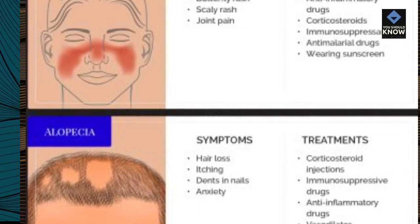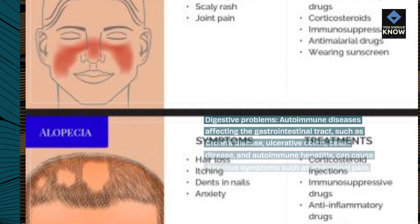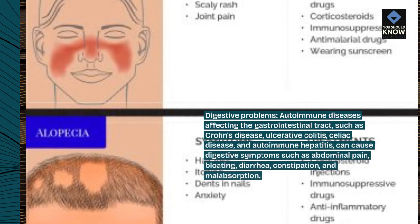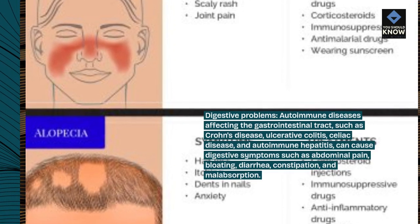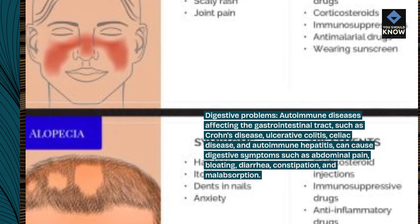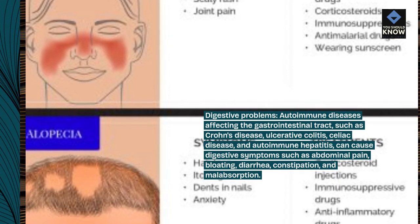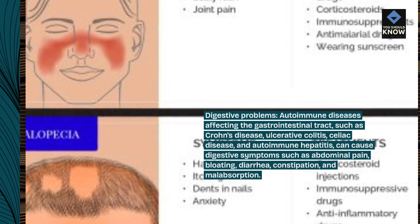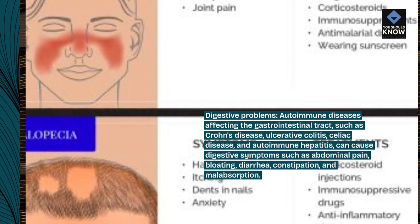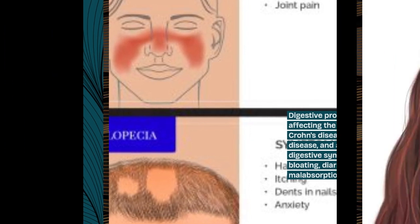Digestive problems: autoimmune diseases affecting the gastrointestinal tract, such as Crohn's disease, ulcerative colitis, celiac disease, and autoimmune hepatitis, can cause digestive symptoms such as abdominal pain, bloating, diarrhea, constipation, and malabsorption.